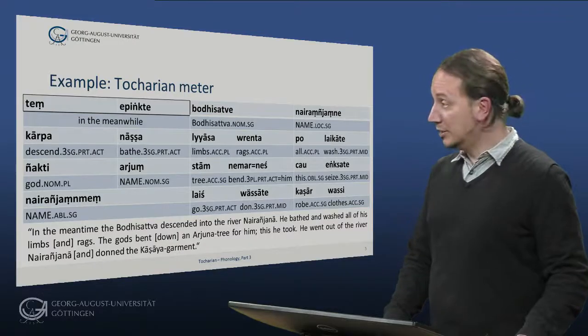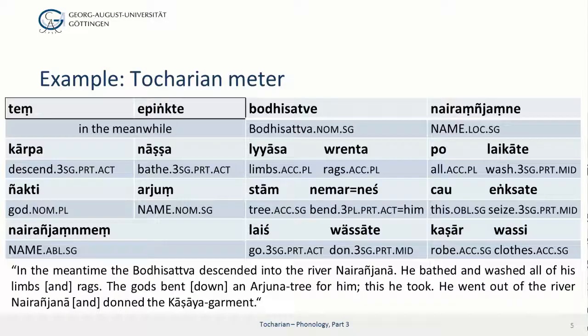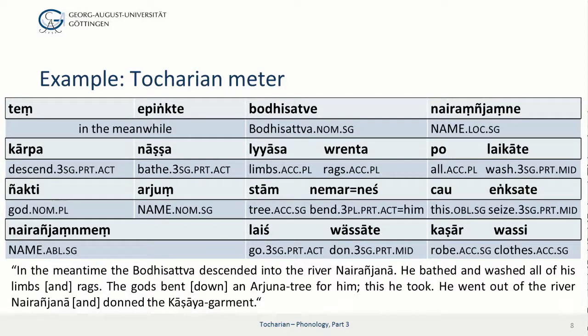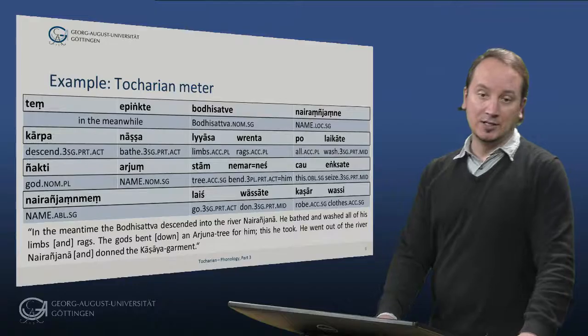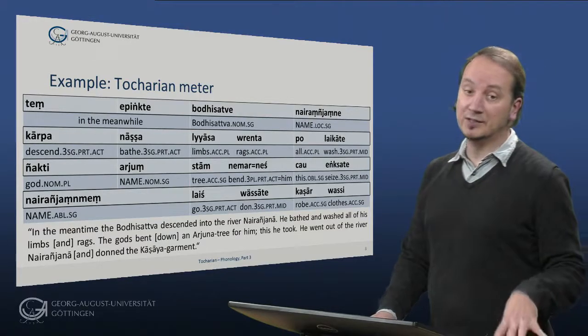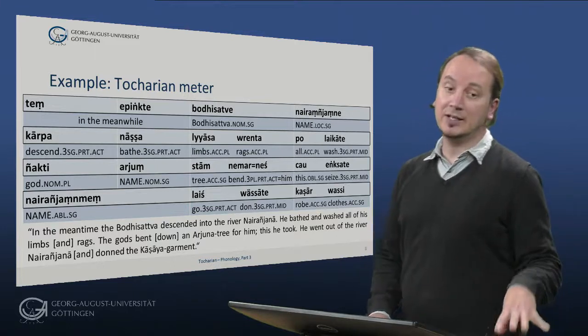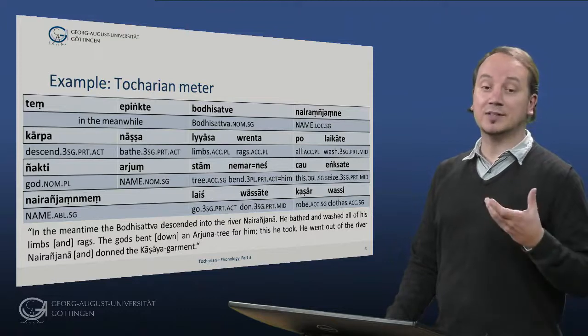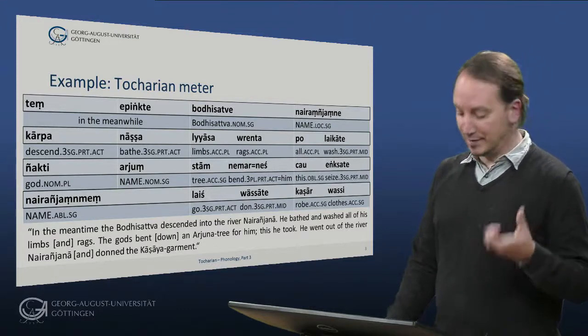So if we look here, ten empikte constitutes a colon. Bodhisattva constitutes a colon and Nairanjana constitutes a colon. The whole thing, these three colons, are called a pada. And the whole passage is a stanza. You notice that every colon has a fixed number of syllables and every pada has a fixed number of syllables and the whole stanza has a fixed number of padas.